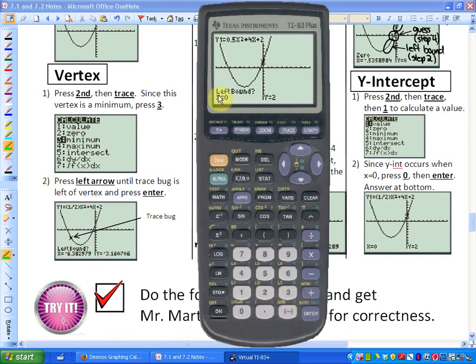Now it's saying left bound. What it wants is me to give the calculator a left boundary or any point that's to the left of the vertex. So as you can see in your study guide, it says press the left arrow until the tracing bug is to the left of the vertex and press enter. So by doing this, I'm just continually pressing left, and you may want to pause this at some point in time until I'm at any point to the left of the vertex, and then I'm hitting enter.